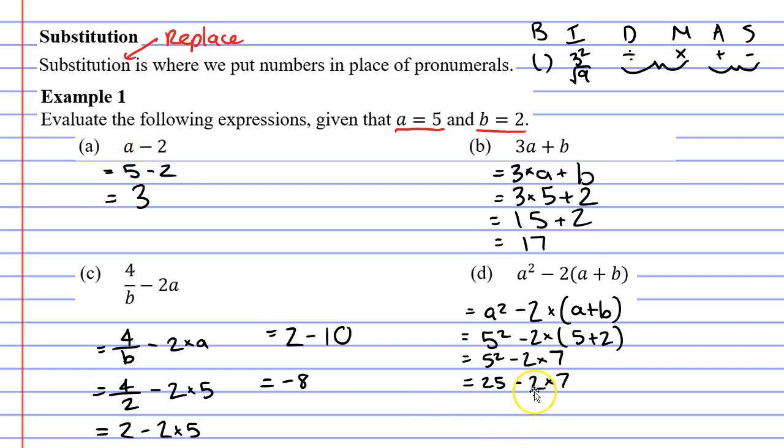We now have subtraction and multiplication. Multiplication comes before subtraction. 2 times 7 is 14. So we have 25 minus 14. 25 minus 14 gives us a solution of 11.